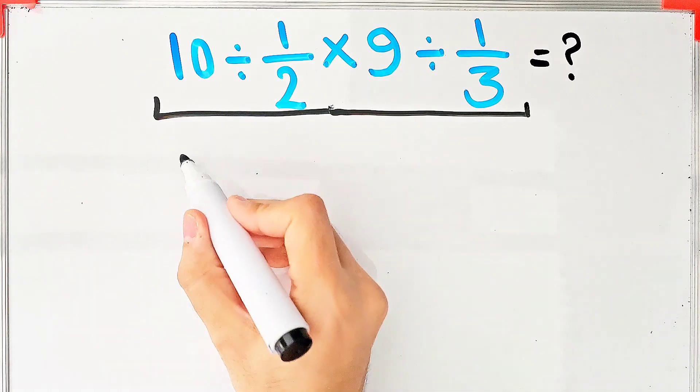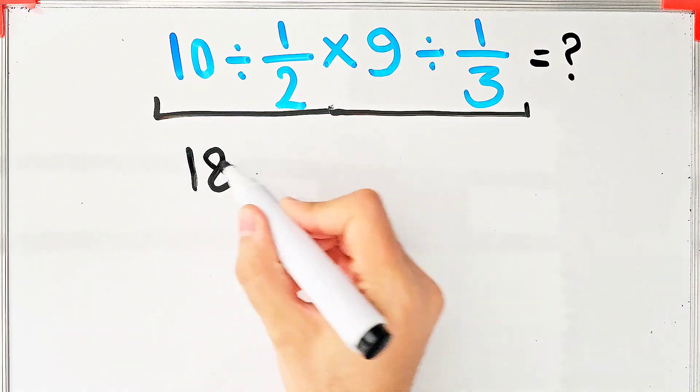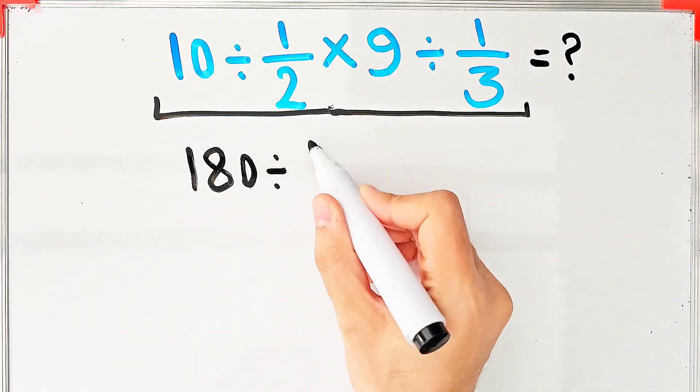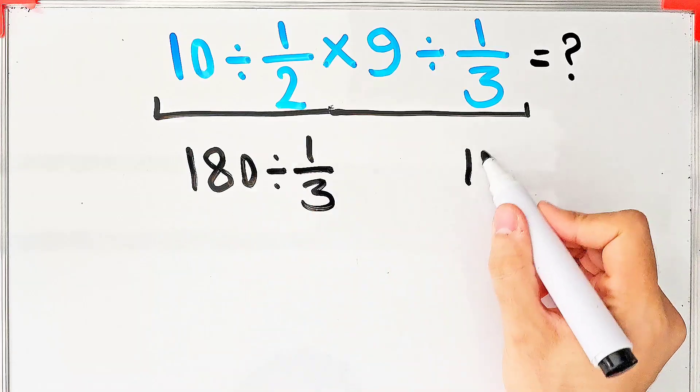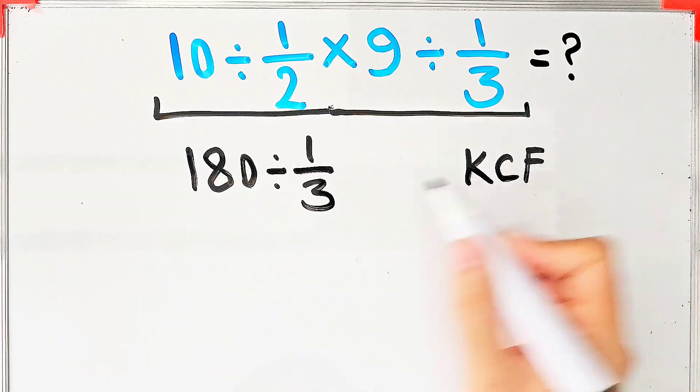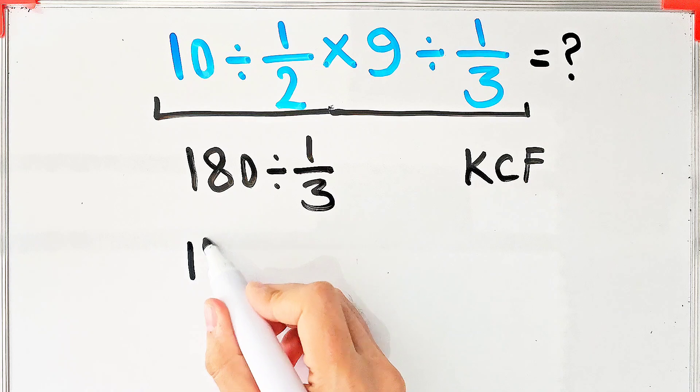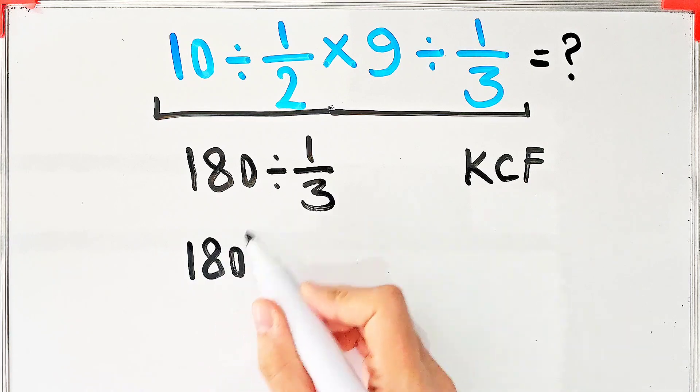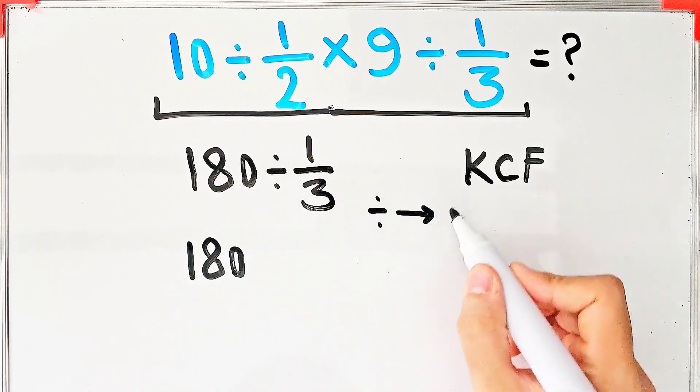We have 180 divided by 1 over 3. According to the KCF rule, we keep the first number as it is, after that we change the division sign to the multiplication sign, and after that we flip the second fraction.